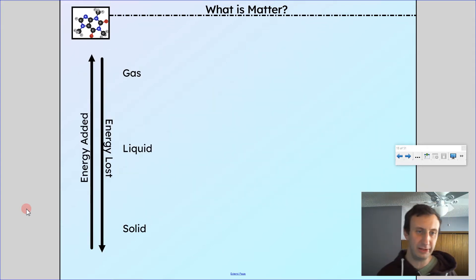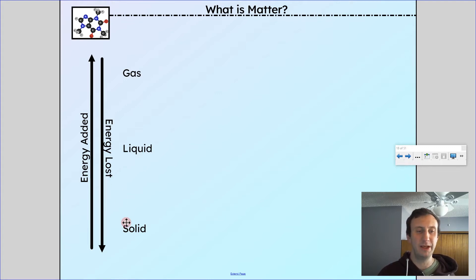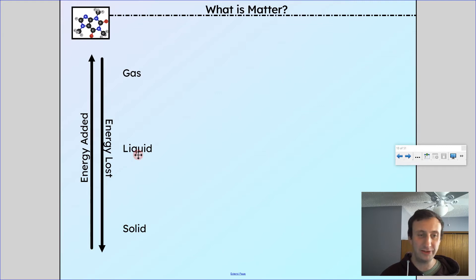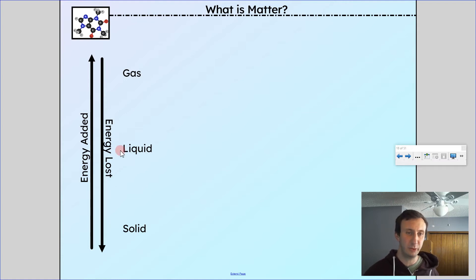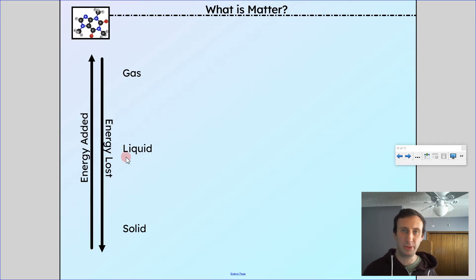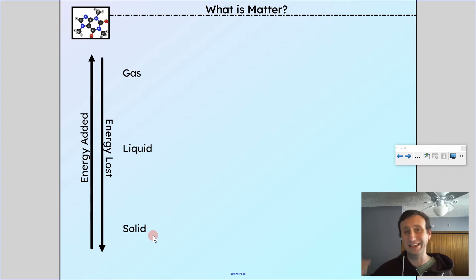Looking at this diagram: as I add energy, it goes from solid to liquid, then liquid to gas. As I lose energy, it goes from gas to liquid, then liquid to solid. Going from a lower energy state to a higher energy state takes energy — it's an endothermic process. Endo means 'in,' thermic means 'heat,' so heat is going in. When energy is being lost, that's an exothermic process — exo means 'out,' heat is leaving — going from higher to lower energy states.